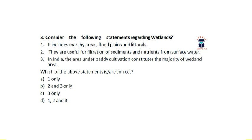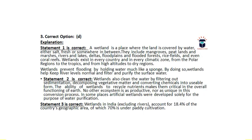Wetlands are basically marshy areas — a type of ecotone between marine and freshwater ecosystems. They are composed of marshy areas, flood plains, and littorals, mostly formed by rivers draining into the sea. They are useful for filtration of sediments and nutrients from surface water. In India, the area under paddy cultivation constitutes the majority of wetland area. The answer is D — all statements are correct.